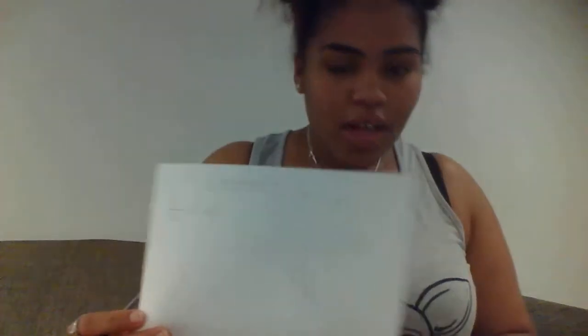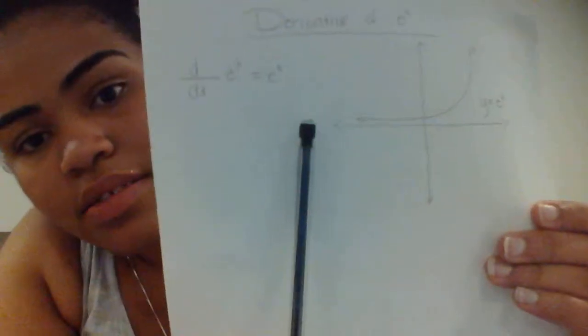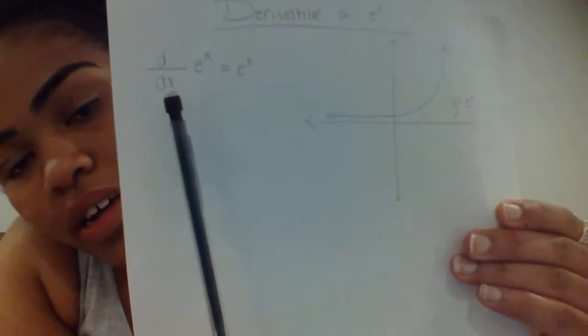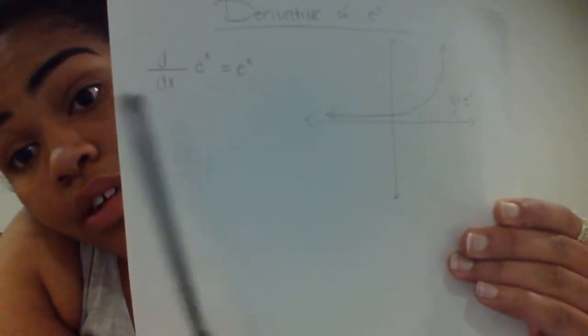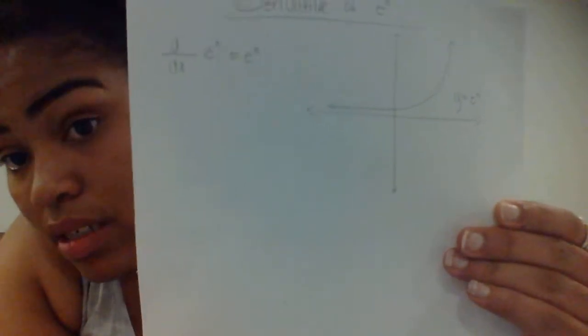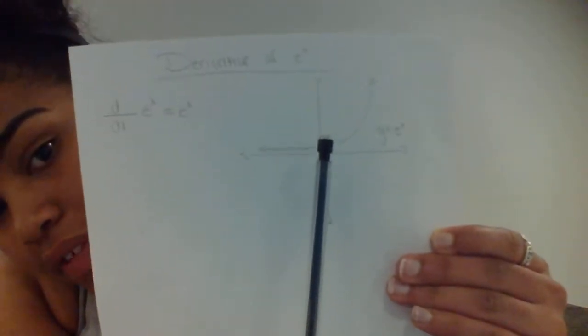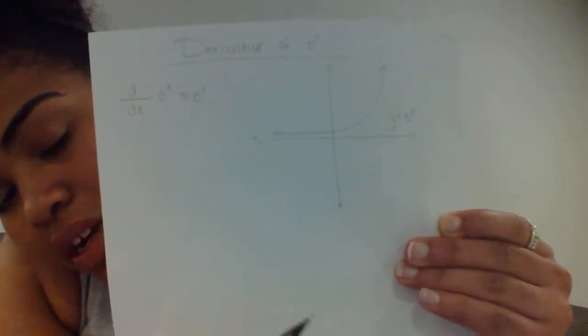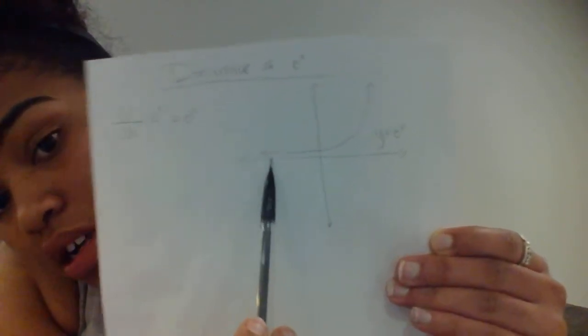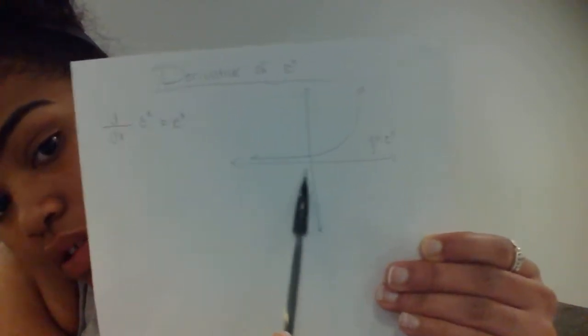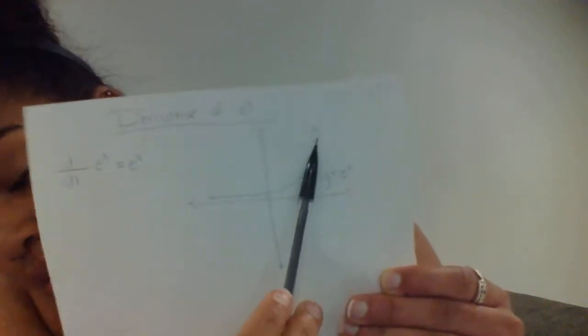Next we have the derivative of e to the x, which is really simple. The derivative of e to the x is always e to the x. Whenever you have e to the x, the derivative will always be e to the x. Here's the graph of e to the x — if you're going to the left, you're getting closer and closer to zero; if you're going to the right, you're getting closer and closer to infinity.